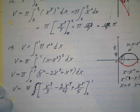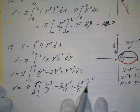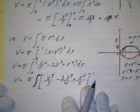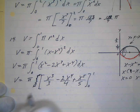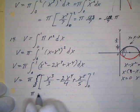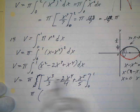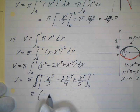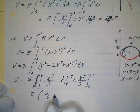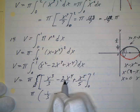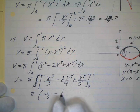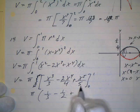And again, all these 0 functions will, or these 0 values will cancel out. So this is going to end up being pi. And then when I put 1 in here, I just get 1 third minus, and if I put 1 in here, I get 2 over 4, which is 1 half, plus 1 fifth.